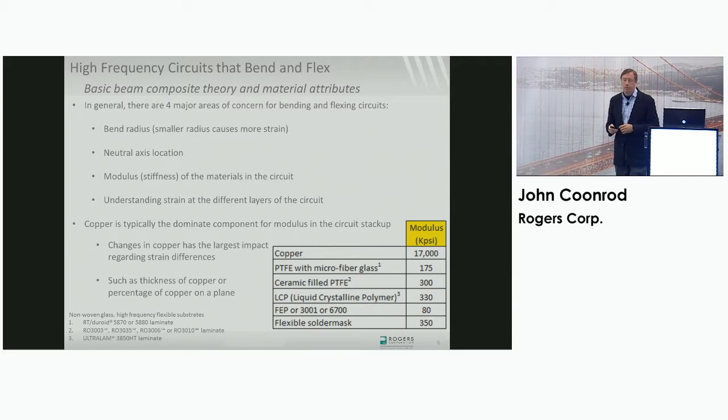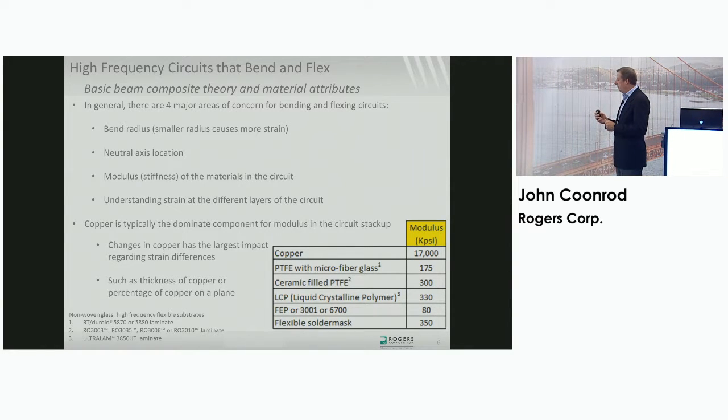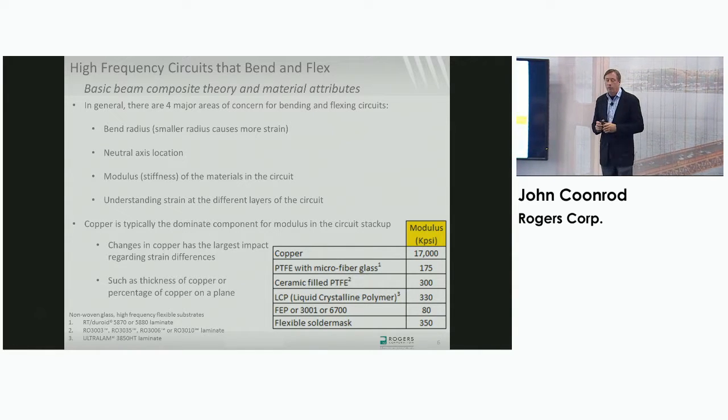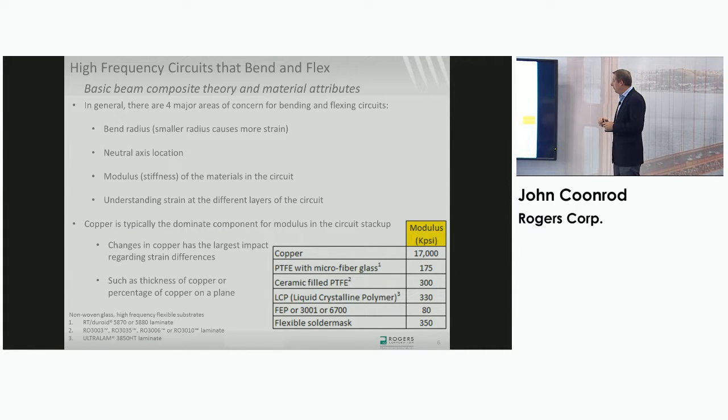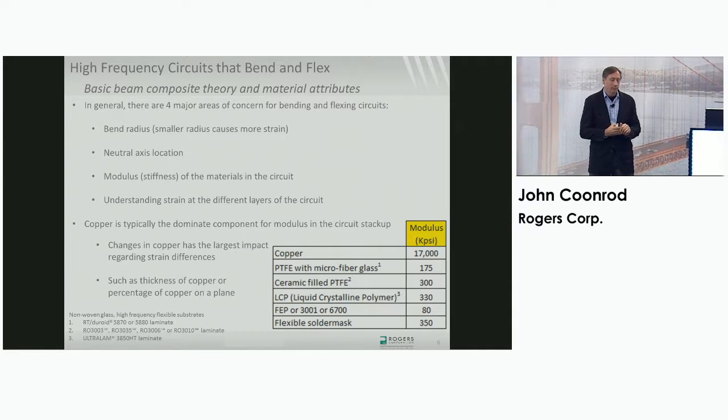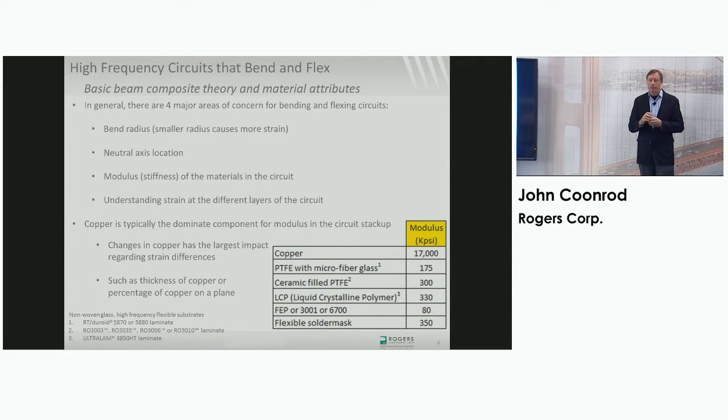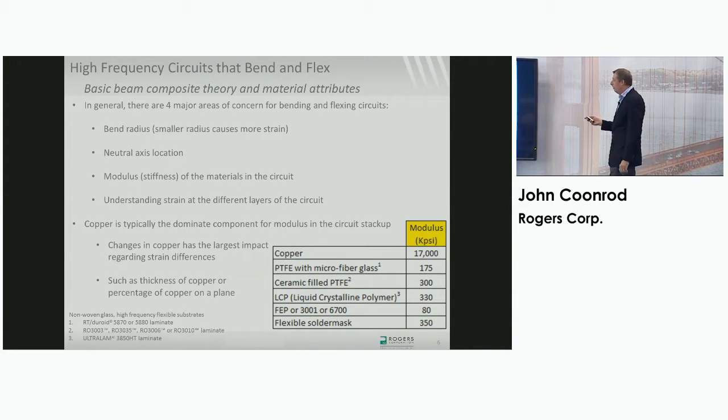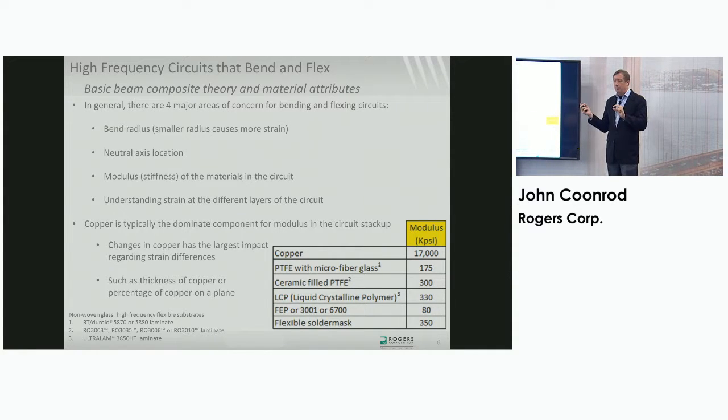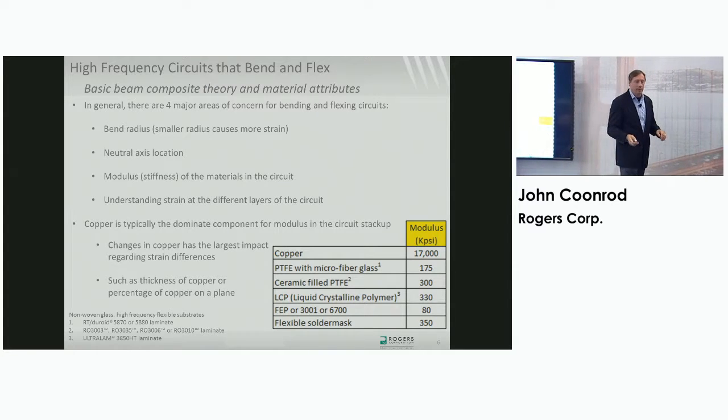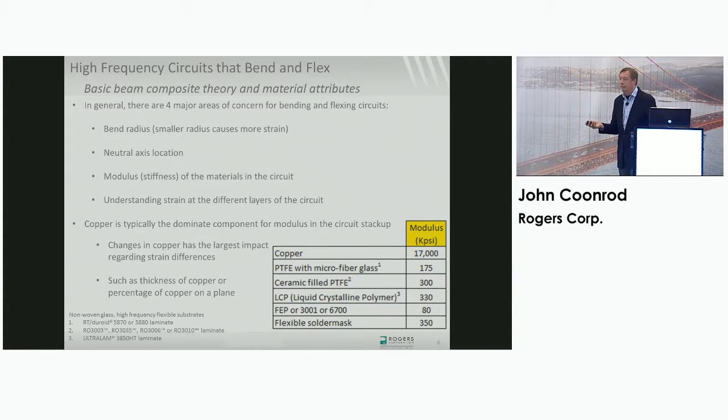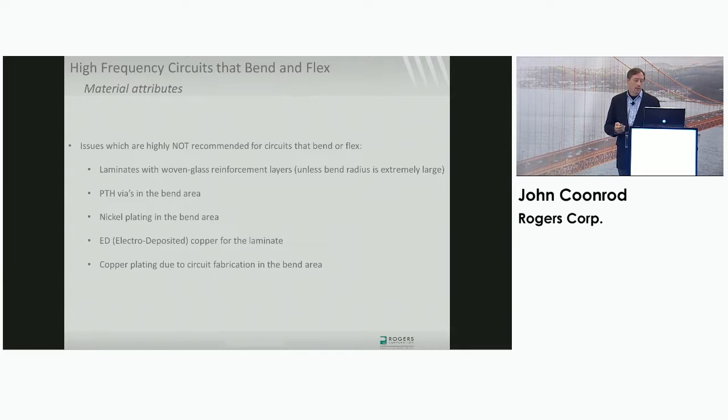In the table that I've shown here to the right, I'm showing some modulus numbers and these are kind of generic. One is the materials that are associated with this are non-woven glass. The other thing is the modulus is outstanding for copper. Copper is the dominant force when it comes to modulus. What that means in a multilayer circuit, if you have very thin layers of copper, that means the overall modulus of the circuit is going to be less, which means when you apply a bend radius, there's going to be less strain applied. If you go the opposite way, you have many layers of copper and you have very thick copper layers on each copper layer, that means when you apply a bend radius, the strain applied to any one of those layers is going to be more.